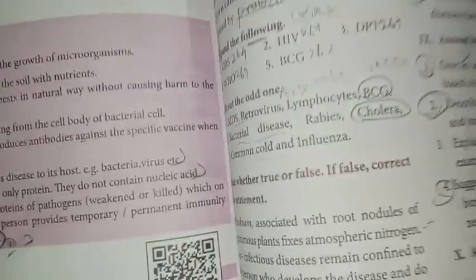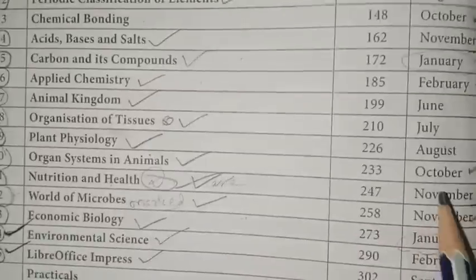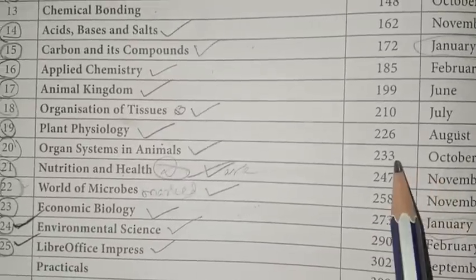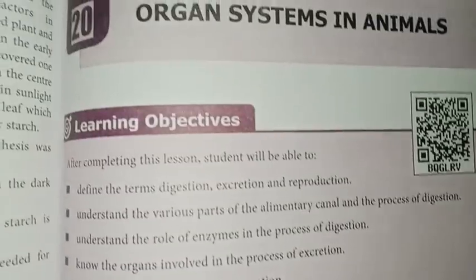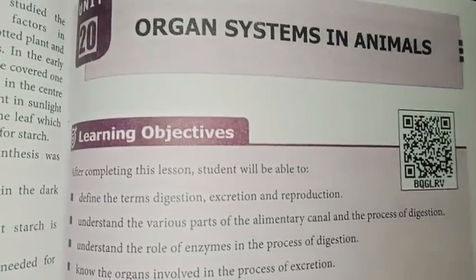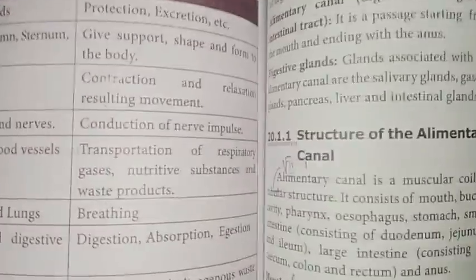Chemistry is over. Next is biology. As usual, we will study 1-mark questions first. Biology page 233, Unit 20. Study plan wise. Unit 20: Organ System in Animals.